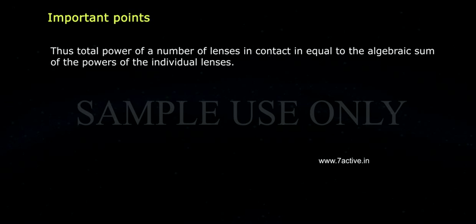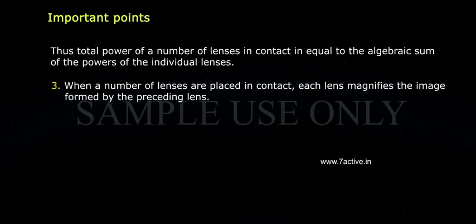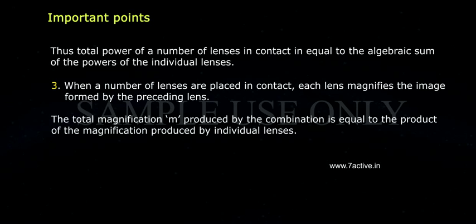Thus, total power of a number of lenses in contact is equal to the algebraic sum of the powers of the individual lenses. When a number of lenses are placed in contact, each lens magnifies the image formed by the preceding lens.